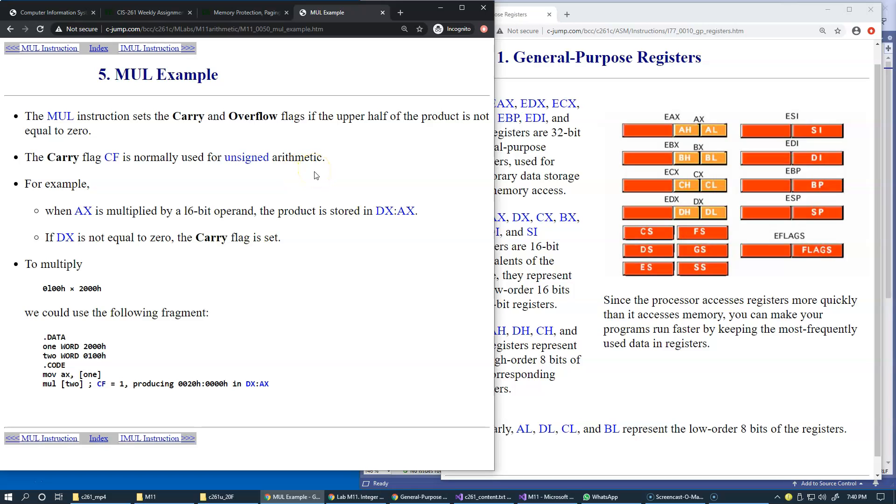When AX is multiplied by 16-bit operand, the result will be in DX and AX. DX can be checked if the carry flag is set. If carry flag is not set we can just ignore it because it does not contain anything, it should be all set to zeros.